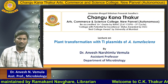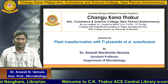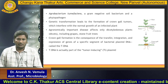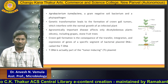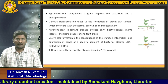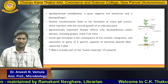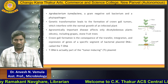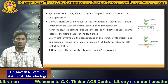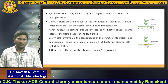Today's topic of discussion is plant transformation with the Ti plasmids of Agrobacterium tumefaciens. I am Dr. Anwesh Narsim Luvemula, assistant professor in microbiology. The Ti plasmid is basically derived from Agrobacterium tumefaciens, a gram-negative soil bacterium considered to be a phytopathogen. It has the capacity to carry out genetic transformation in plants, leading to a disease called crown gall disease.